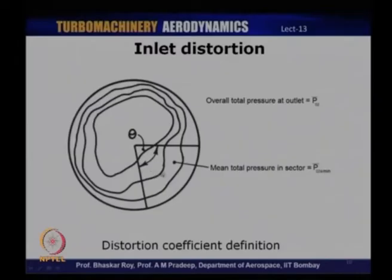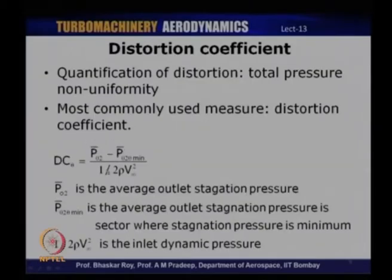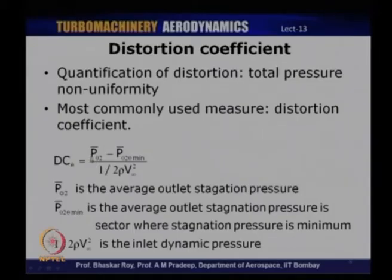The distortion coefficient tells us the extent to which the distorted sector affects the overall total pressure. A higher value of DC-theta means a greater difference between the average total pressure and the distorted sector, and therefore greater distortion. This is one of the most popularly accepted ways of defining distortion, widely used by engine manufacturers and intake designers as a parameter that can quantify the extent of distortion.